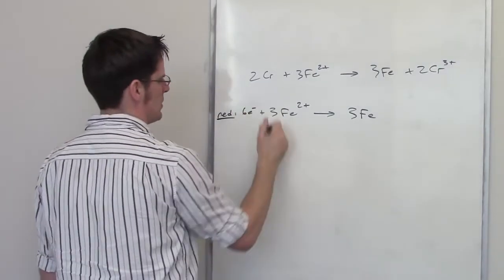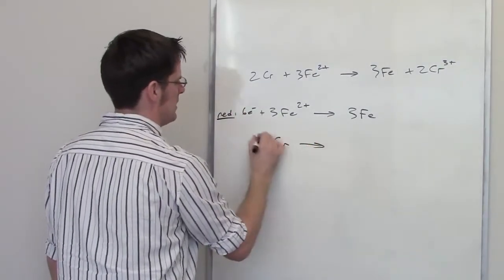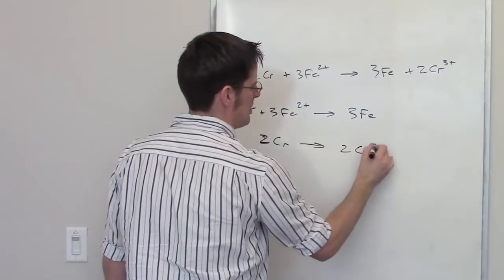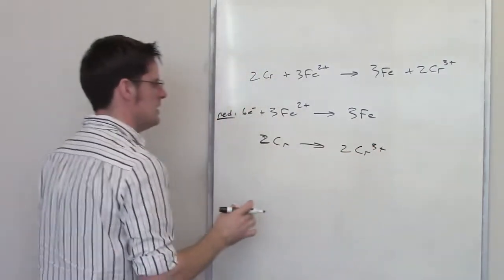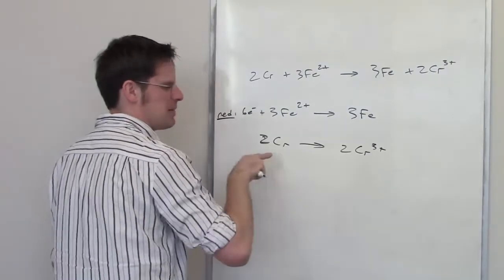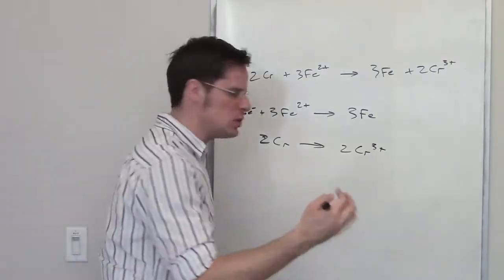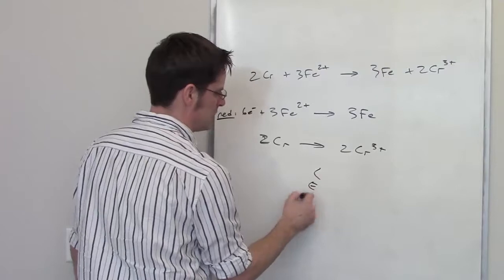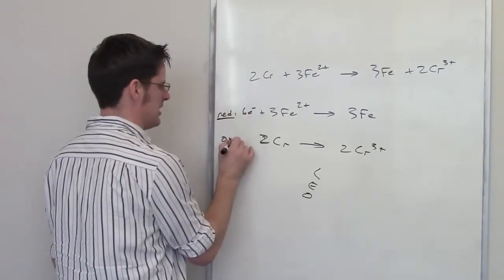How about the other reaction? I've got chromium, two of them, being transformed into two chromium 3+ cations. Well, this is going from chromium 0 to chromium 3+, which means it's becoming more positive, which means it's losing electrons. Losing electrons is oxidation, so this is my oxidation step.